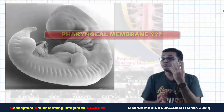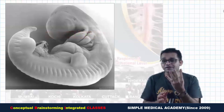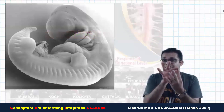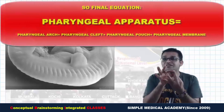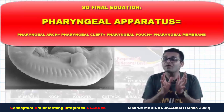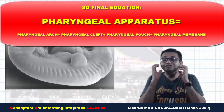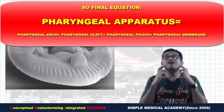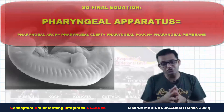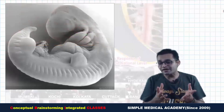We will also study a fourth component — where the ectoderm, endoderm, and mesoderm meet together — that is the pharyngeal membrane. So because it is made up of four structures — pharyngeal arch, pharyngeal cleft, pharyngeal pouch, and pharyngeal membrane — it is known as the pharyngeal apparatus.